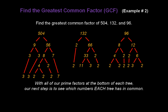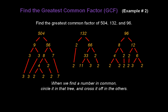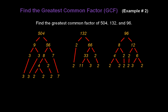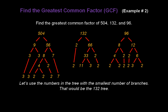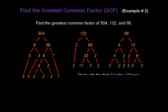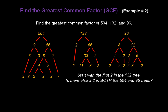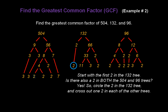With all of our prime factors at the bottom of each tree, our next step is to see which numbers each tree has in common. When we find a number in common, remember, circle it in that tree and cross it off in the others. Let's use the numbers in the tree with the smallest number of branches — that would be the 132 tree. Start with the first 2 in the 132 tree. Is there also a 2 in both the 504 and 96 trees? Certainly there is. So circle the 2 in the 132 tree and cross out one 2 in each of the other trees.